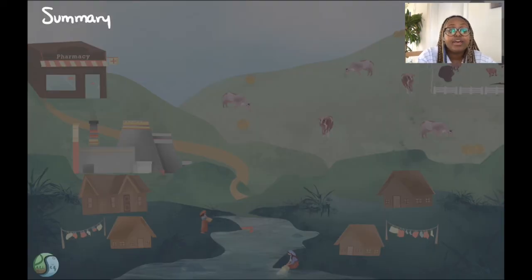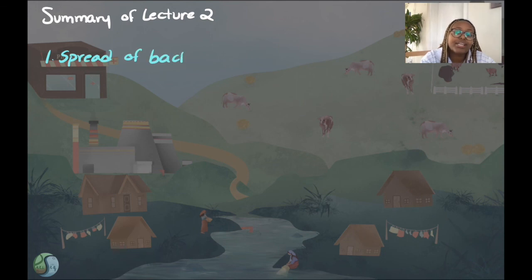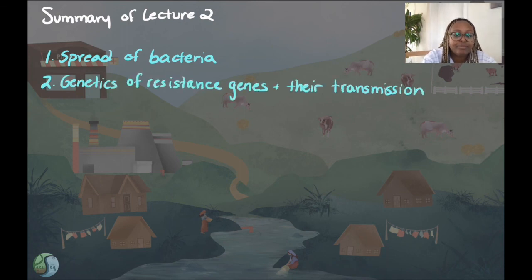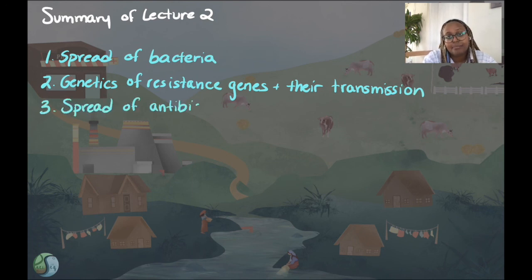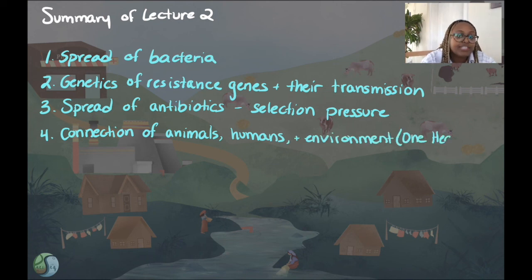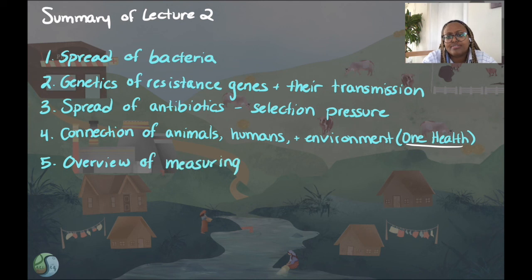Let's recap lecture two. First, we talked about how bacteria are everywhere and can spread through water and other routes. Then, we talked about resistance genes and how they are transferred through horizontal transfer. The spread of antibiotics through the environment from medical, fecal, and pharmaceutical waste promotes the emergence of resistant populations of bacteria. Finally, the relationship between animals, humans, and our environment means that resistant bacteria can spread throughout many environments. The potential impact of this spread on human health is discussed in the next video titled, Why is Antimicrobial Resistance a Public Health Issue?, where we will discuss the global burden of disease and public health significance of antimicrobial resistance.